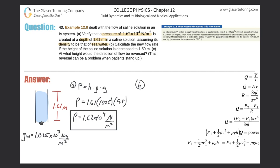Now let's take a look at letter B. Letter B says: calculate the new flow rate if the height of the saline solution is decreased to 1.5 meters. If the height of this column of IV fluid becomes lower relative to the point of insertion into the arm, what happens to the pressure at the bottom of this column? It should also go down. Height goes down, pressure goes down by the same proportional amount. So if pressure goes down, that affects flow rate too.